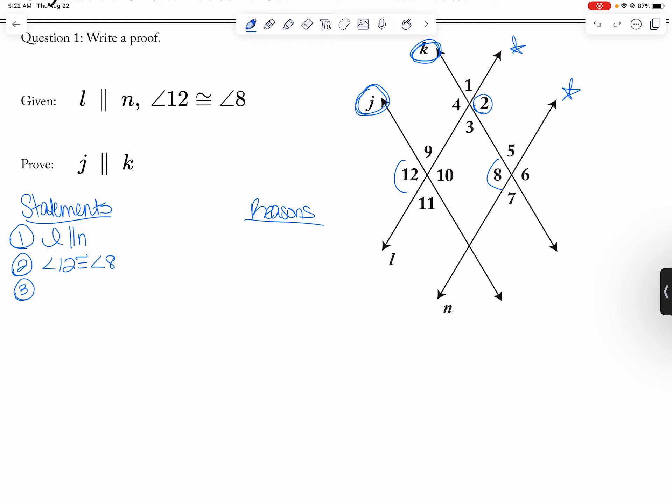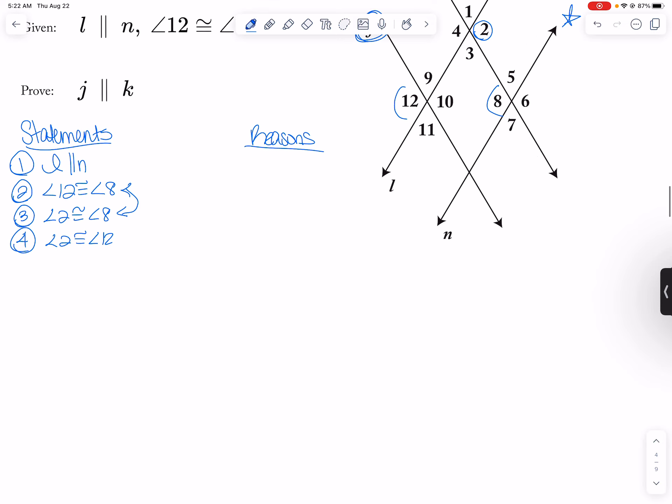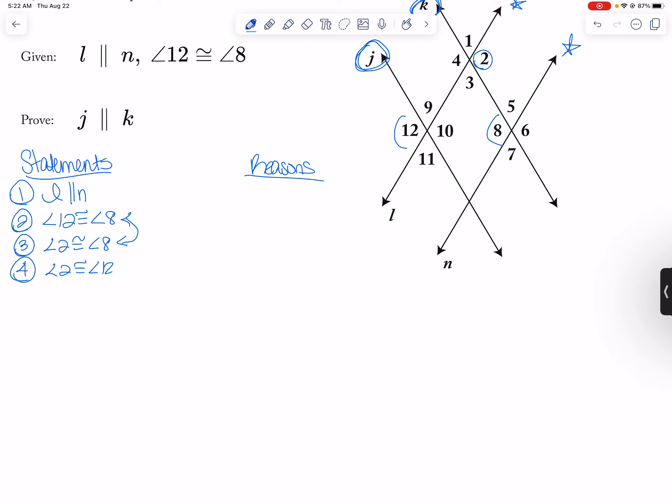I'm actually trying to prove angles are congruent instead. So I would have used alternate exterior, corresponding, or alternate interior. Okay. So I use alternate interior. So that means that angle 2 is congruent to angle 8. And then I said the angle 2 is congruent to angle 12 because I can combine these two statements together. And if 2 and 12 are congruent, they are outside J and K.